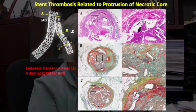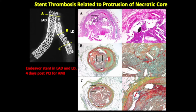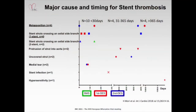You can also get protrusion of a necrotic core into the lumen. This patient had an Endeavor stent implanted in the LAD and diagonal branch four days post-PCI for acute myocardial infarction. The necrotic core is protruding into the lumen, which led to thrombus formation. The major causes of stent thrombosis by timing: in the early period under 30 days there were 10 cases; 31–365 days had 4 cases; and greater than 365 days had another 4. Main causes were malapposition, struts crossing side branches, protrusion into the lumen, uncovered struts, and hypersensitivity.